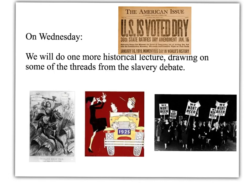So this concludes our look at the slavery issue and some of the arguments and rhetoric that were used. We will do one more historical examination — this will be of the Prohibition, the lead-up to Prohibition and the aftermath of the years that the United States went dry. We'll look at some of the threads that extended from the slavery debate and how the debate over Prohibition has resonance today, particularly with the marijuana debate. So I look forward to seeing you on Wednesday, when we'll talk about the effects of banning alcohol in the United States. Thank you.